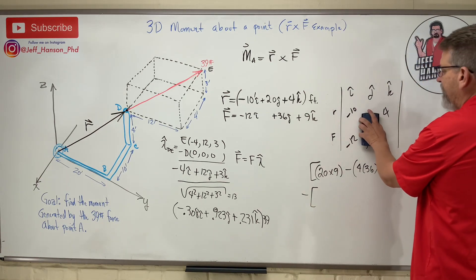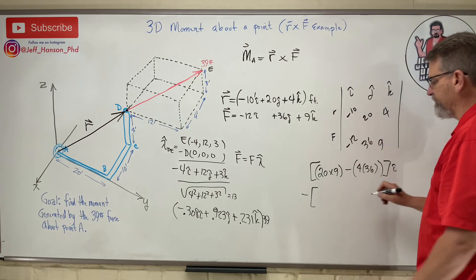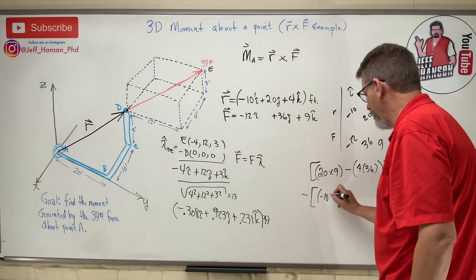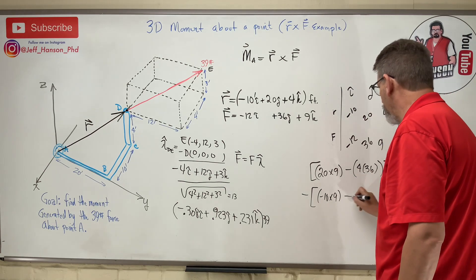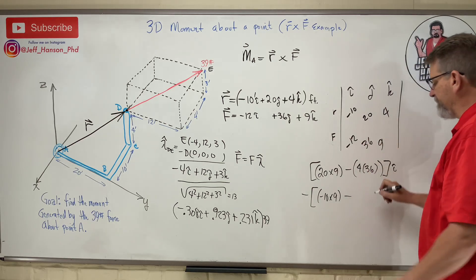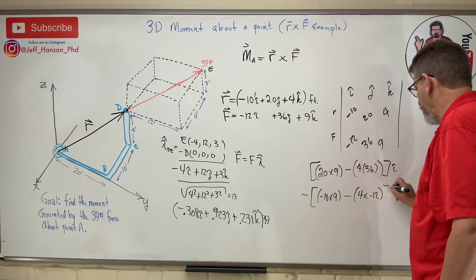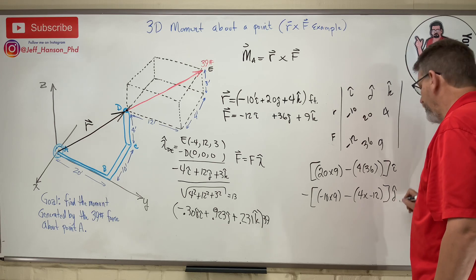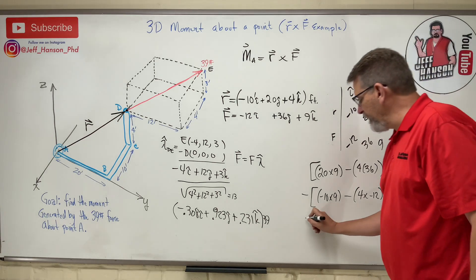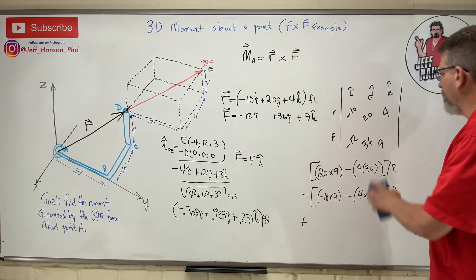And then what, minus, cover up the j. Minus 10 times 9 minus 4 times negative 12.